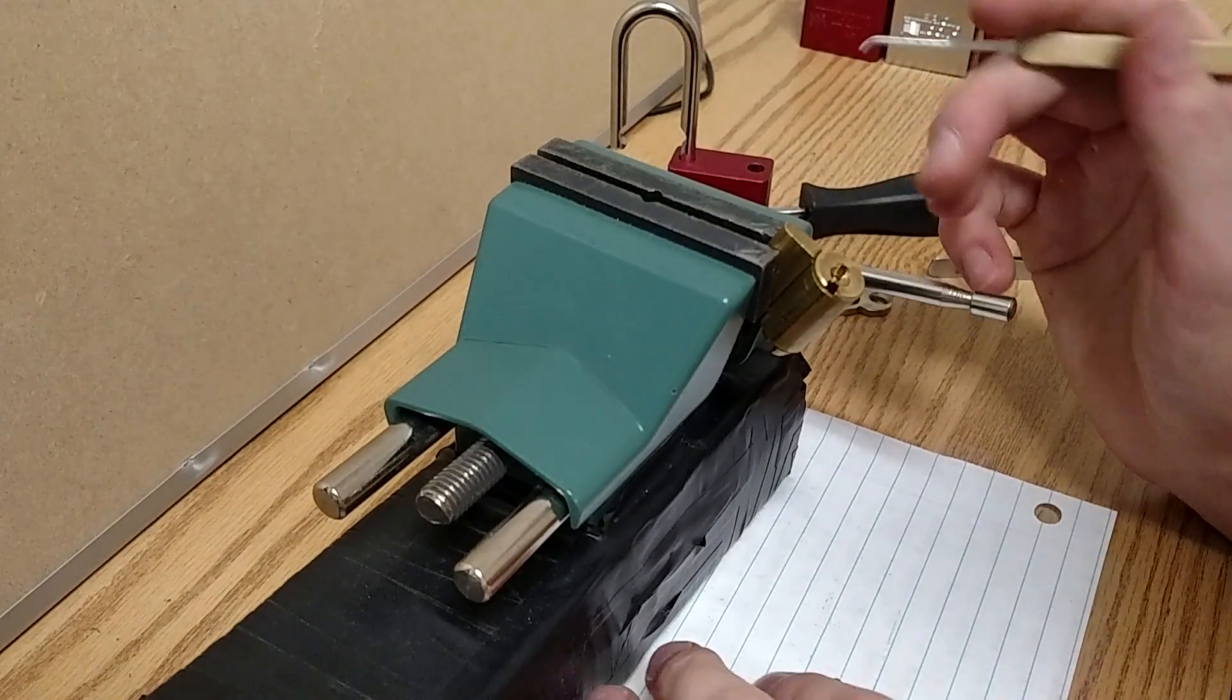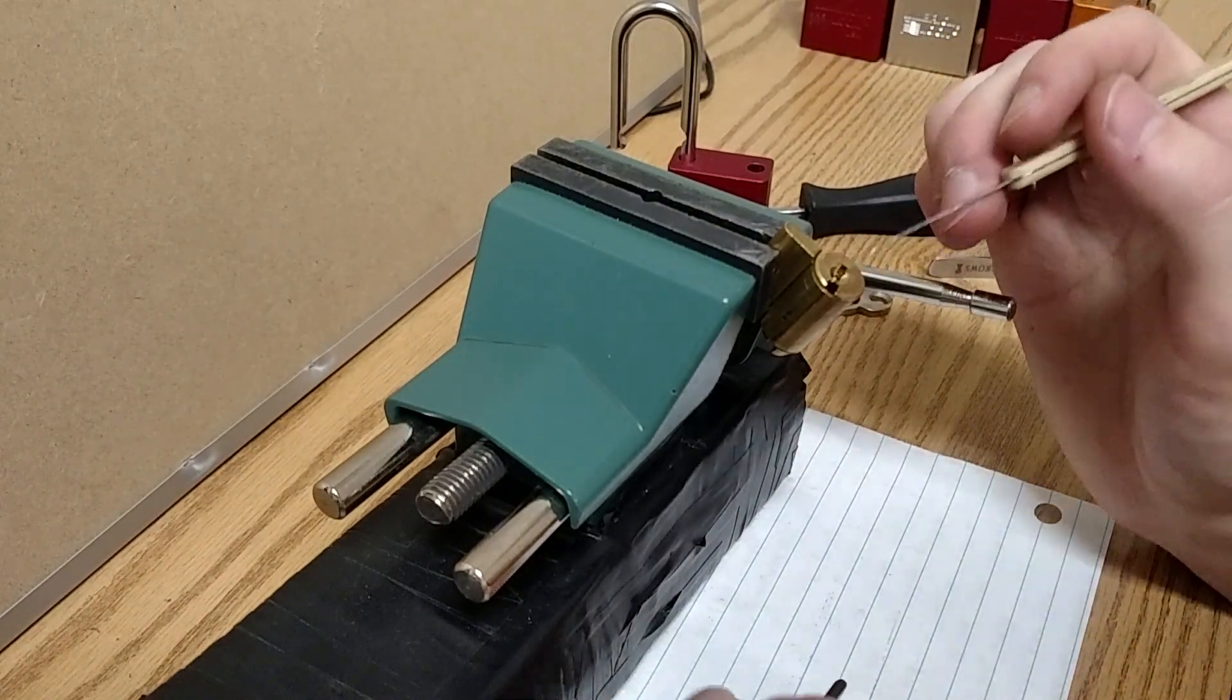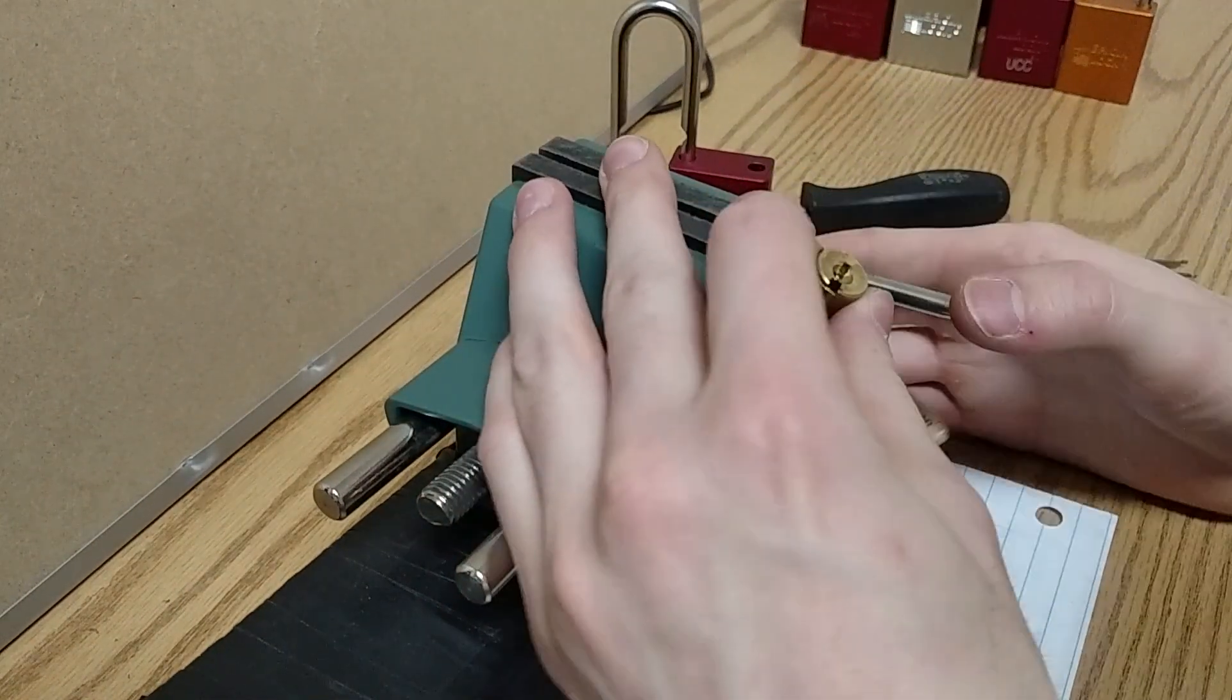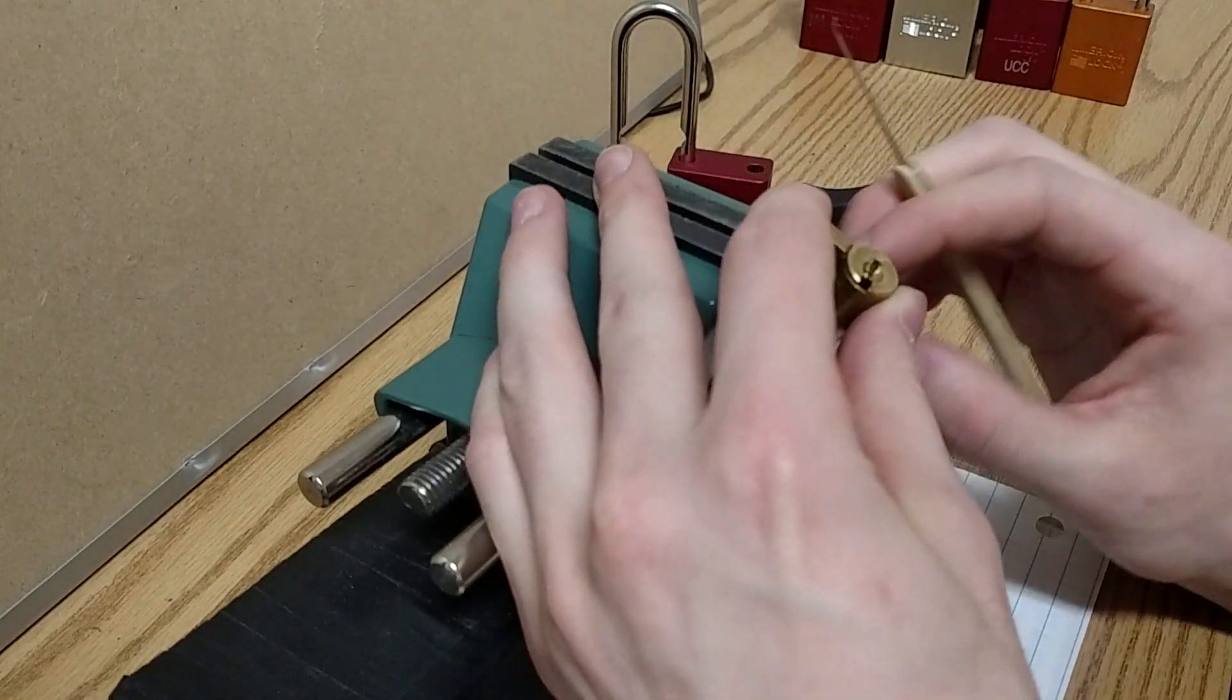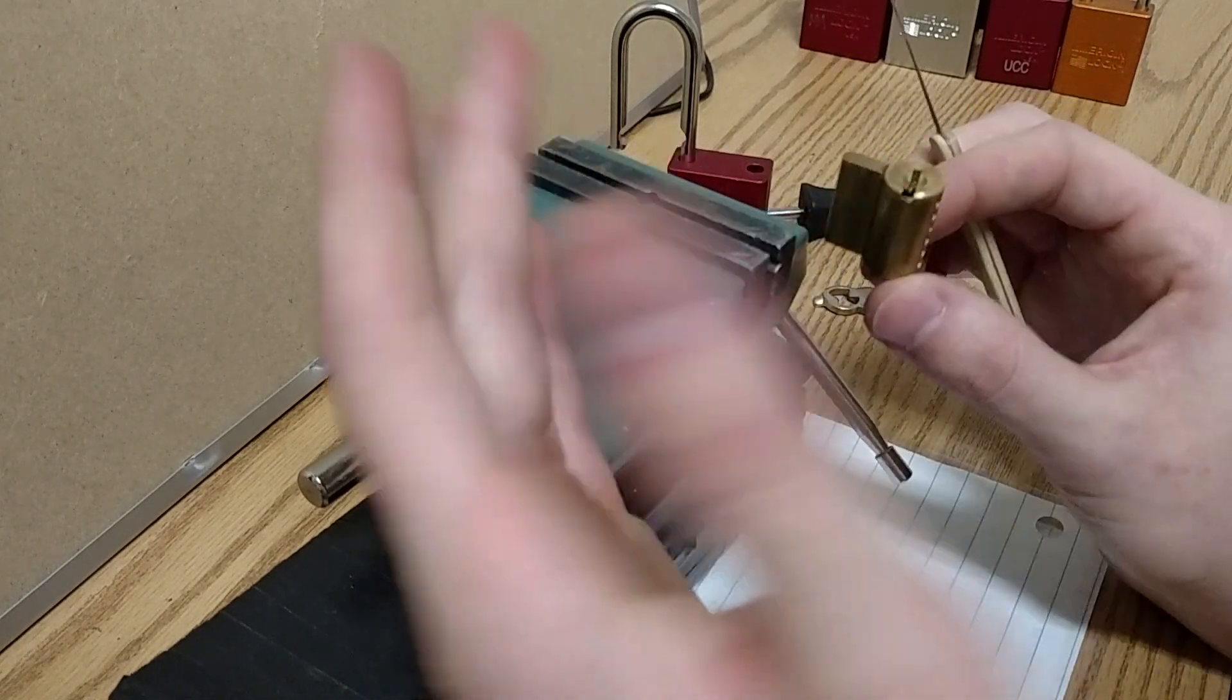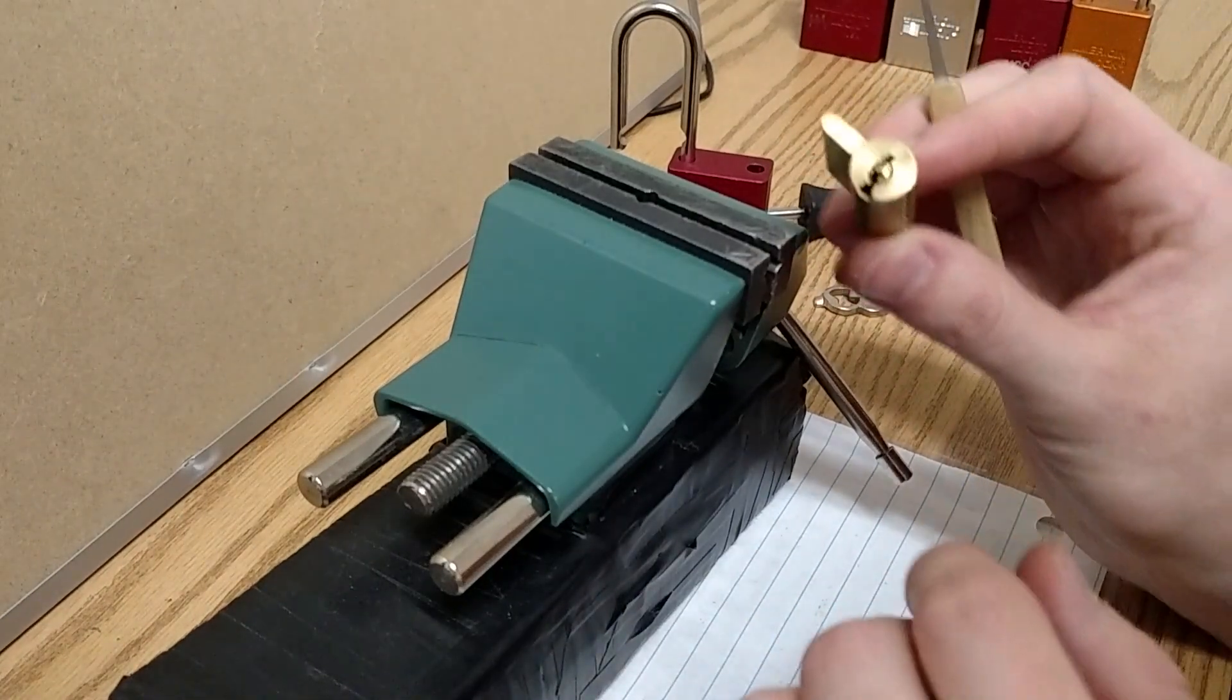This is going to be a really quick video on how to take apart one of these American lock cylinders without a plug follower. A lot of people think that you need one, but it's actually easier if you don't use a plug follower for this. It's preference of course, but this is a little faster.